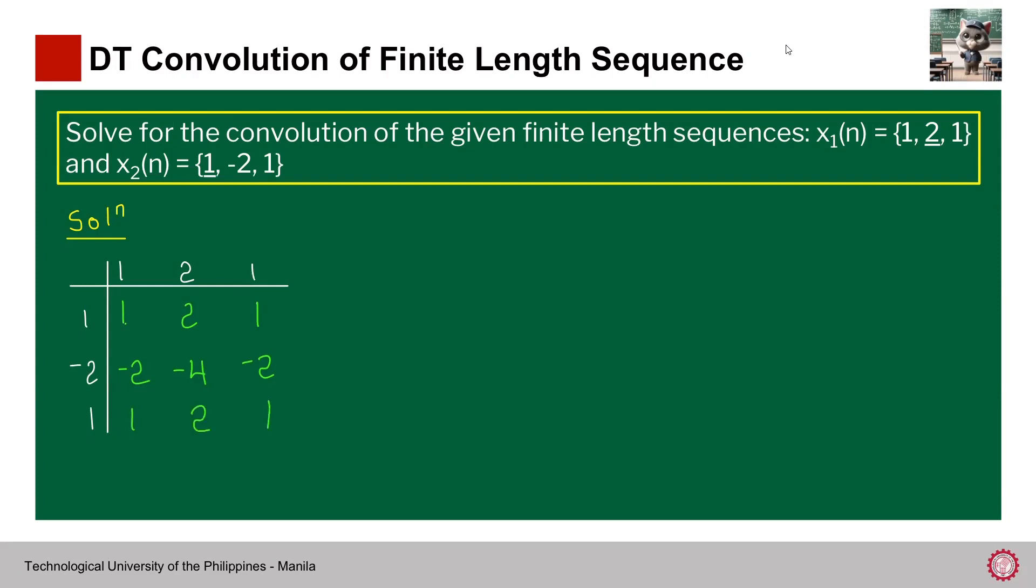That's how you perform, that's the first step of the sum by column method. The next step is we will divide it by diagonals. We count on the diagonals, and then for each diagonal we will get the sum. This is actually the result of the convolution of x₁(n) with x₂(n).